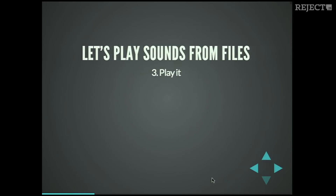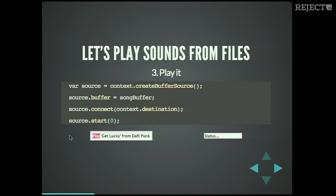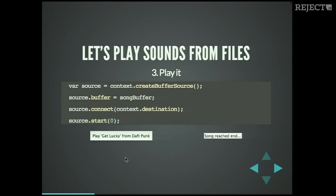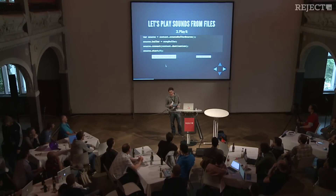Playing a sound file is also fairly simple. We create a buffer source node from the context, assign it the buffer we got from the XHR request, connect the source to the destination, and say start zero. Let's play Get Lucky — this song is not available in your country. We're in Germany, so we're actually not allowed to play that song. Unstable APIs — that was not planned.